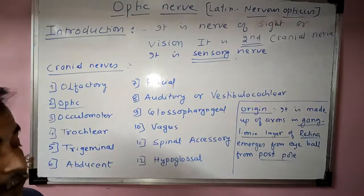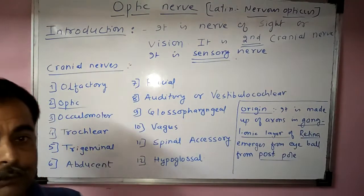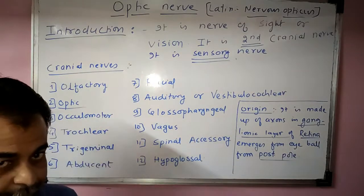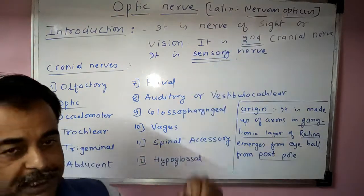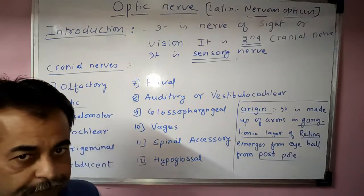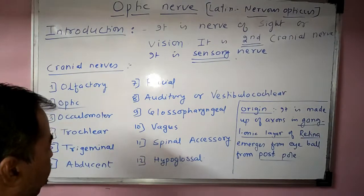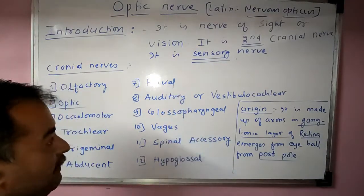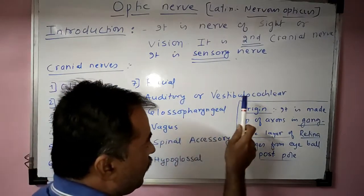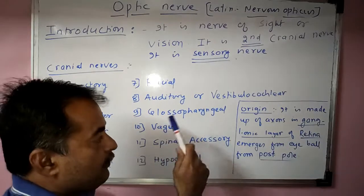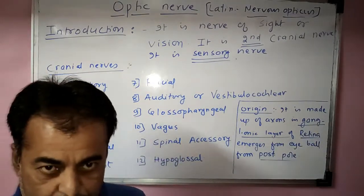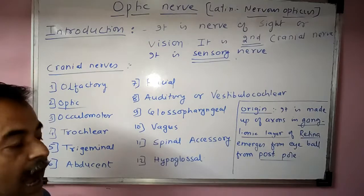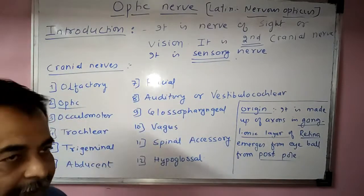There are 12 pairs of cranial nerves. First is the olfactory, second is the optic which is our today's topic, third is the oculomotor, fourth is the trochlear, fifth is the trigeminal, sixth is the abducent, seventh is the facial, eighth is the auditory or vestibulocochlear, ninth is the glossopharyngeal, tenth is the vagus nerve, eleventh is the spinal accessory or accessory nerve, and twelfth is the hypoglossal nerve.